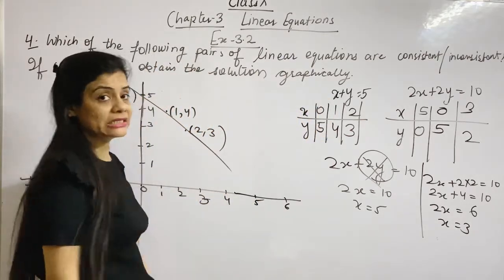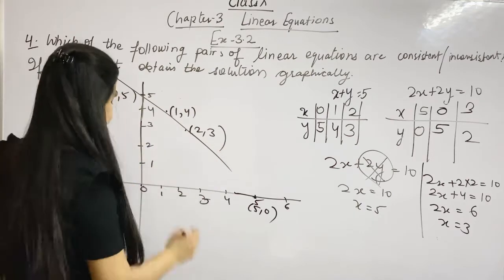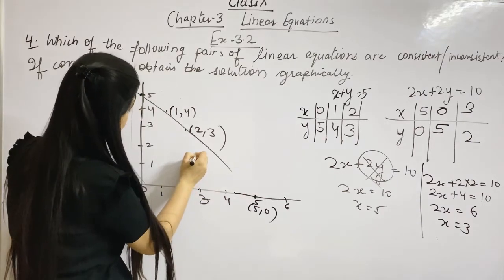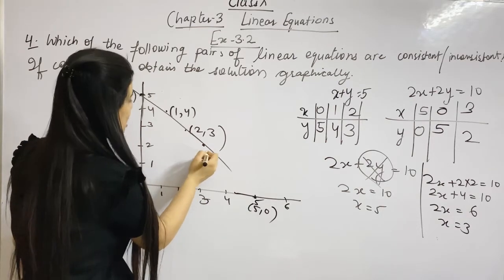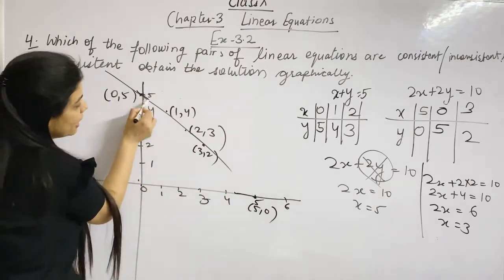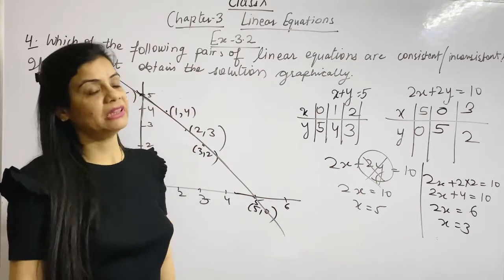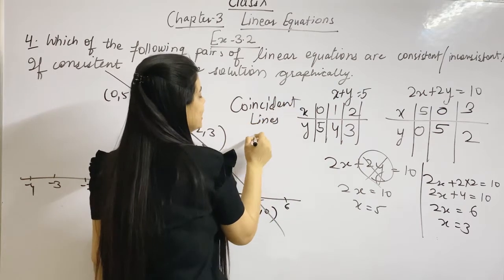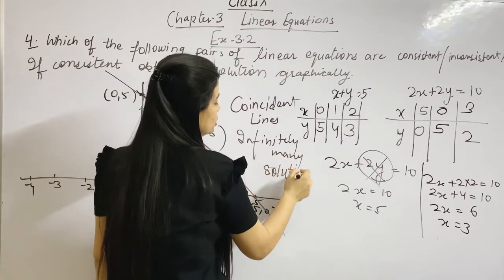For the second equation the points are (5, 0), (0, 5), and (3, 2). When we join these three points, the line is the same as the first equation's line. So these are coincident lines, and they have infinitely many solutions. This is the graphical representation of these equations.